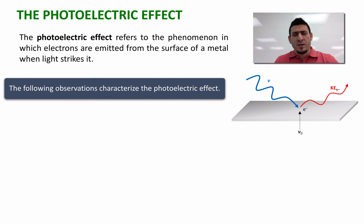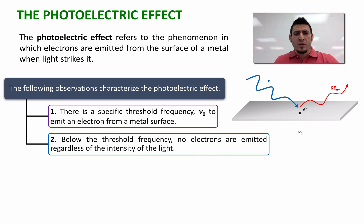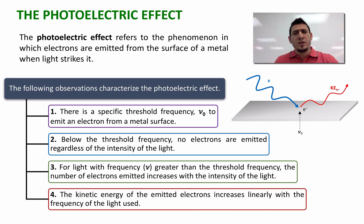Now the photoelectric effect is characterized by several observations. Number one, there is a specific threshold frequency to emit an electron from a metal surface. Number two, below the threshold frequency no electrons are emitted regardless of the intensity of the light. Number three, if the light frequency is higher than the threshold frequency, electrons will be emitted, and the number of electrons emitted will increase with the light intensity. And number four, the kinetic energy of the emitted electrons increases linearly with the frequency of the light used.